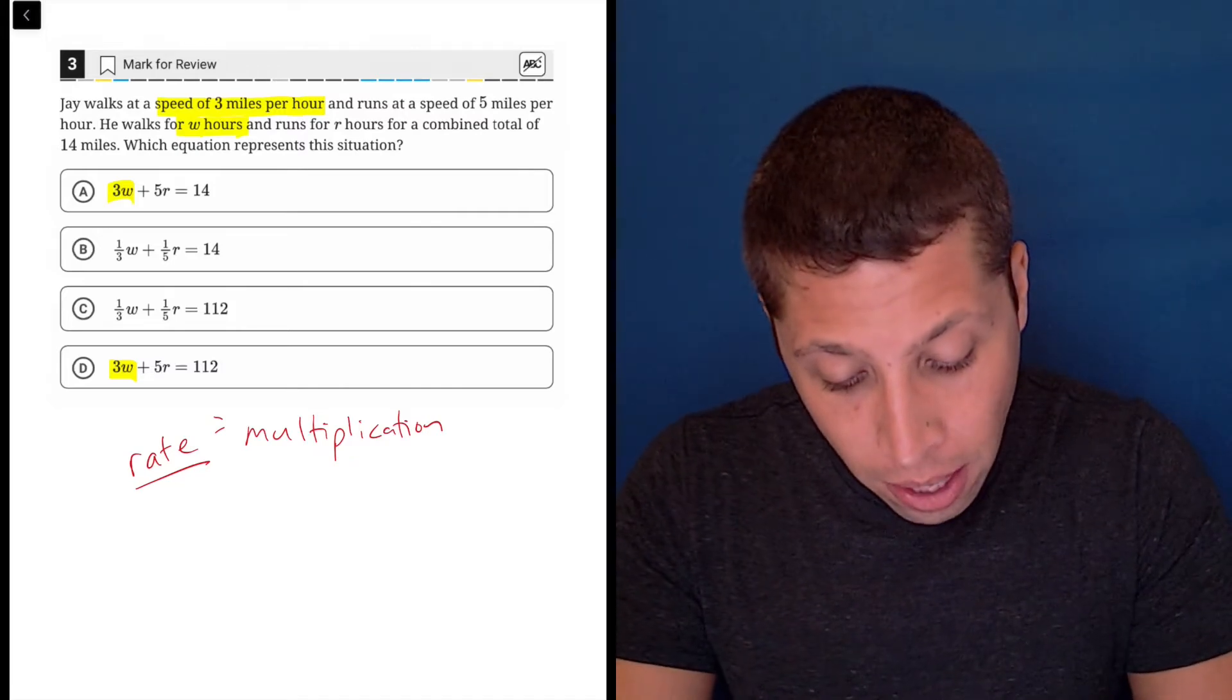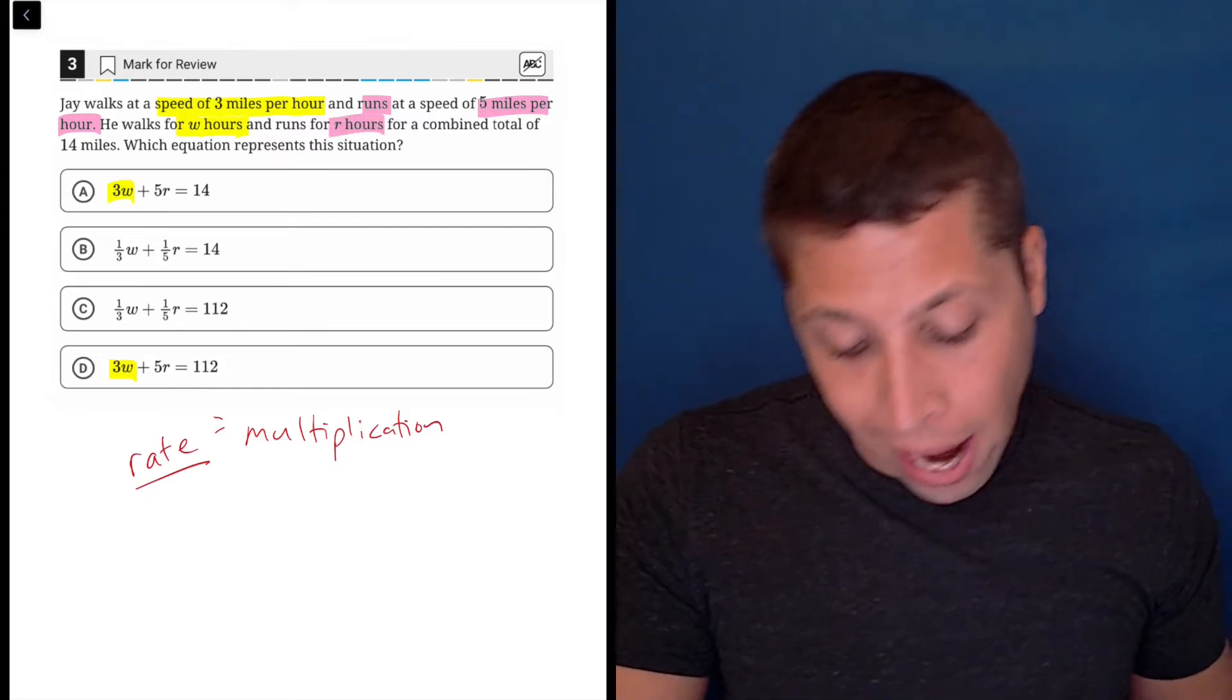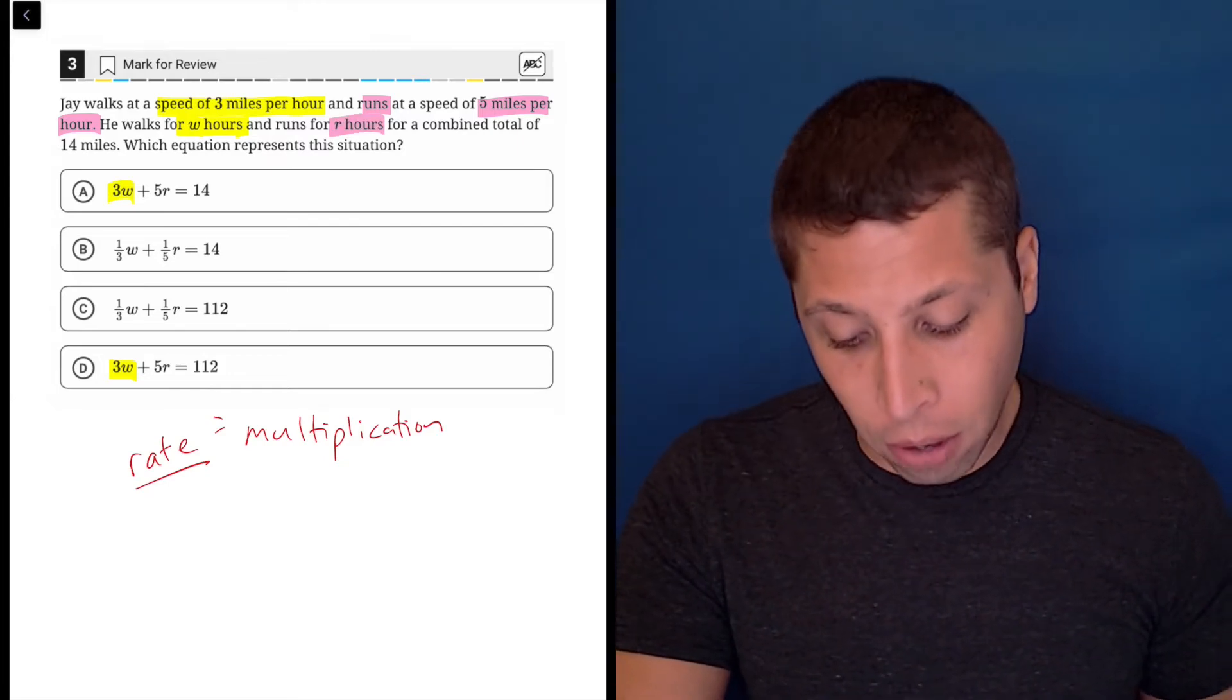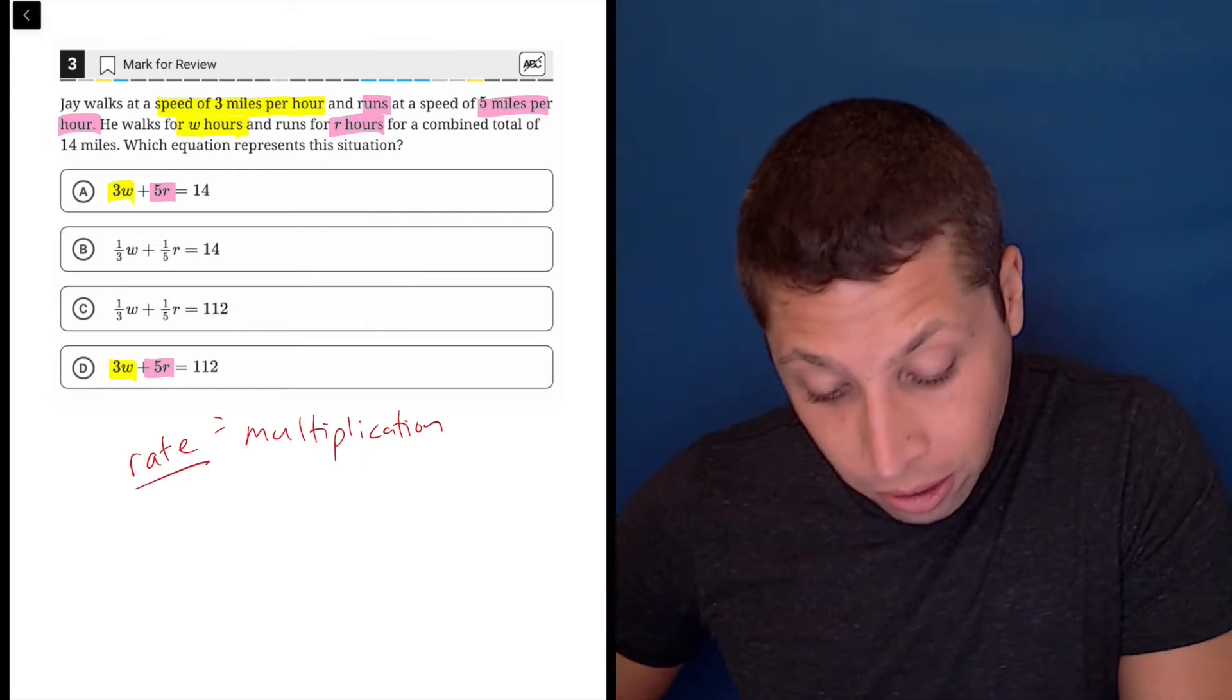And so if we did the same thing for the other rate, miles per hour is the running speed. So that's R hours, right? So there we have 5R. So that actually doesn't really matter because that's in both the choices that we're still considering.